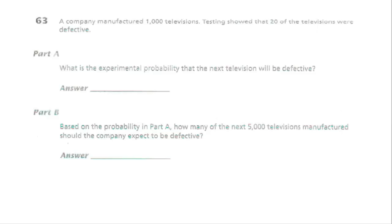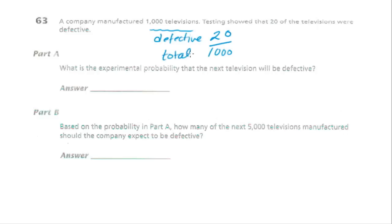Question 63. A company manufactures televisions, and testing shows that 20 out of every 1,000 are defective. Part A asks for the experimental probability. This isn't like rolling a die — we can't say each outcome is equally likely. This information comes from an experiment: 1,000 televisions made, 20 defective. So the experimental probability is 20 over 1,000.